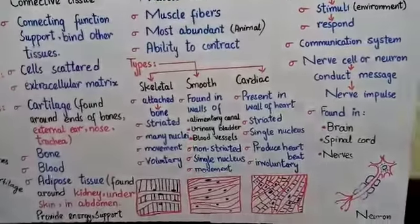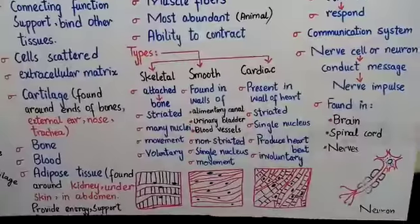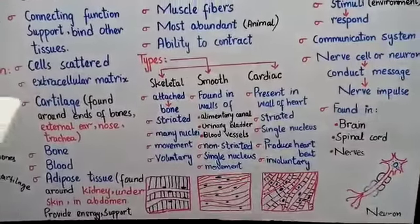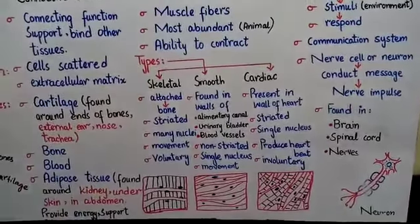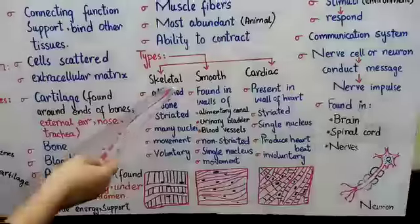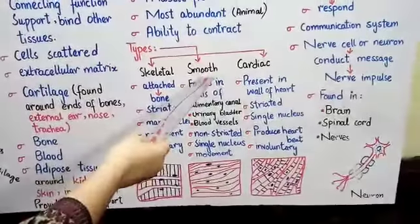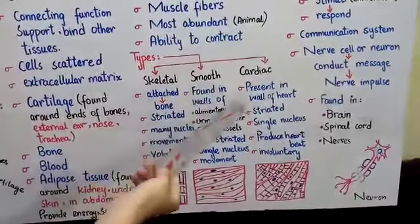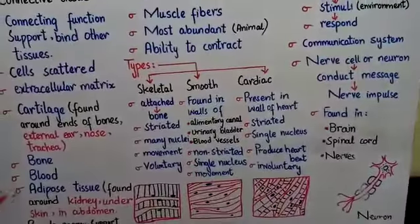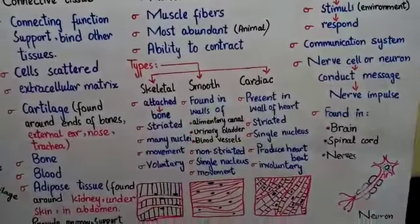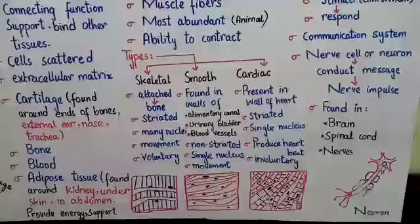Basically, there are three types of muscle tissue: the first one is skeletal muscles, the second one is smooth muscles, and including cardiac muscles. Now let's discuss them one by one.